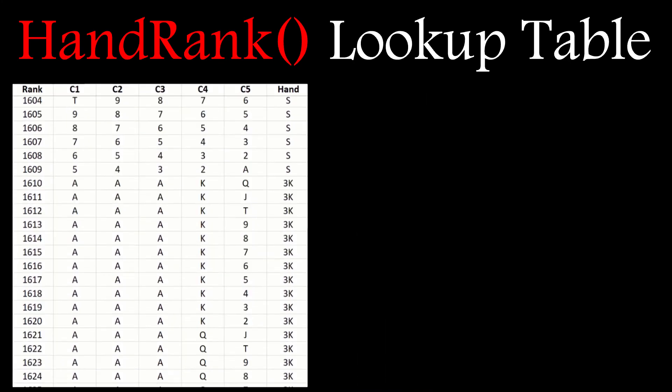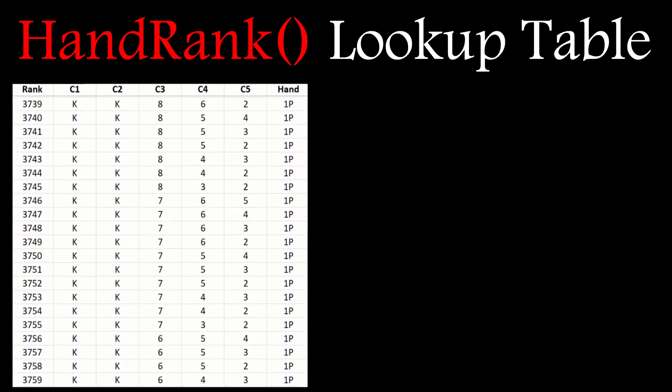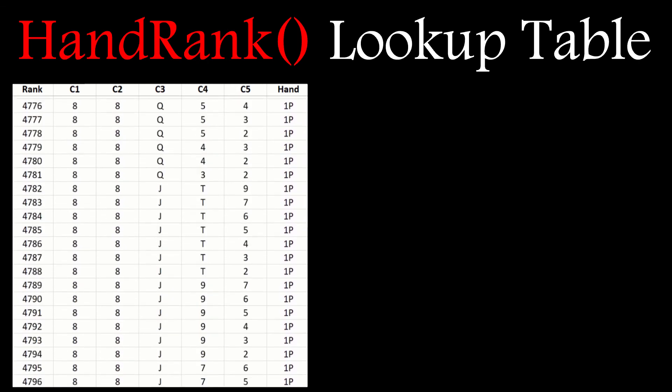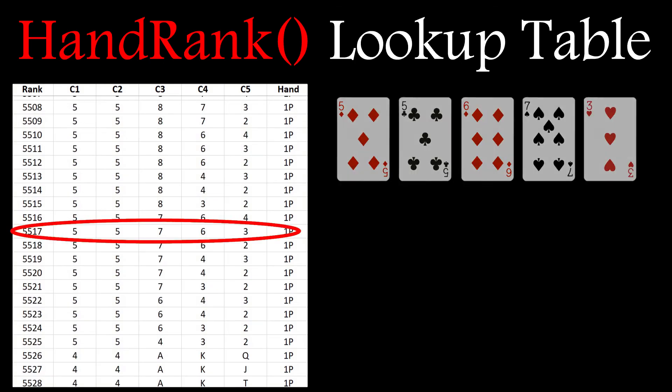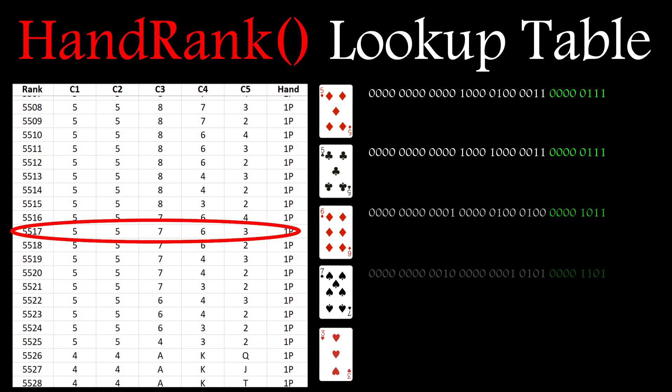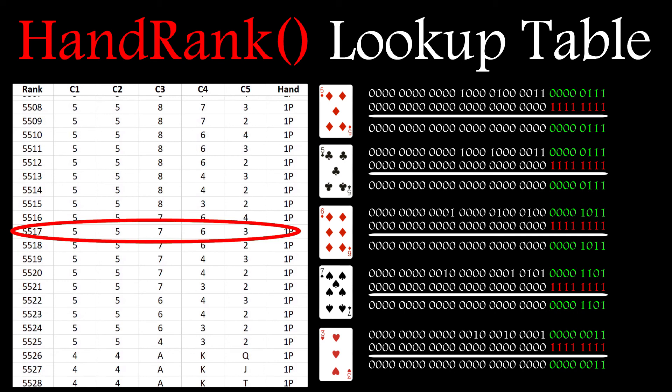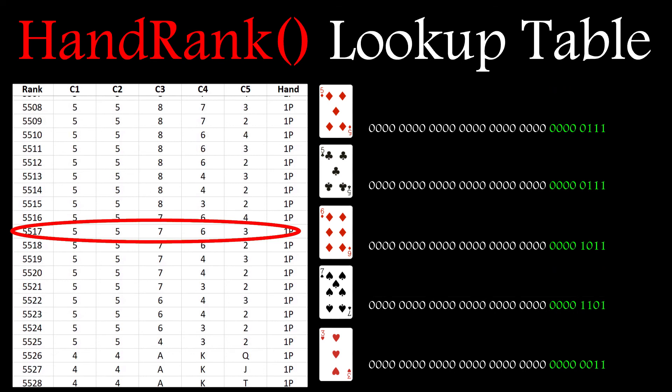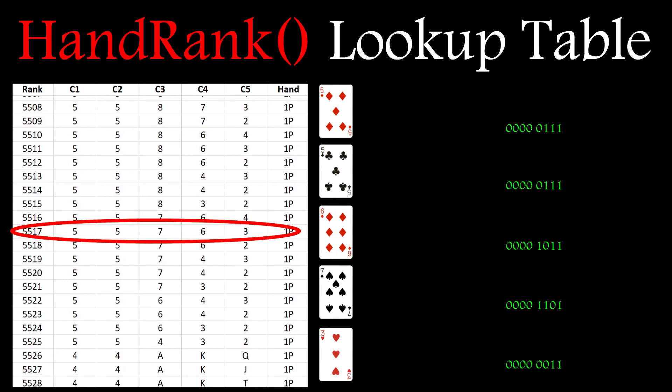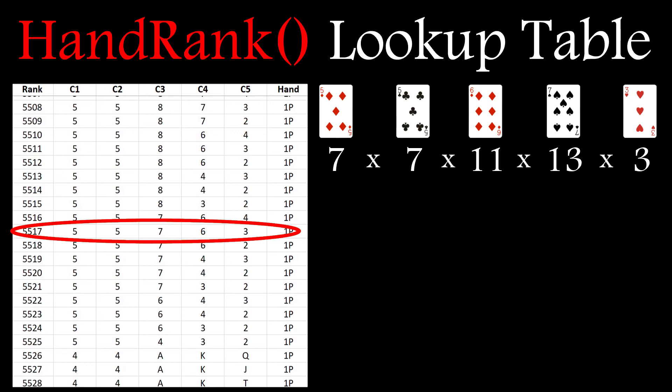I'll need to run through the hand equivalent classes again, and use an appropriate bitmask to extract the prime number for each card. And instead of inserting it into an array, this time I'll use it as an array index. I've called the new array HandRank, and it needs over 104 million rows, most of which will be empty. For the example hand shown, the prime product is 21021, which means I need to go to that row in the table and insert the hand rank value for that poker hand. In this case, it's 5517.